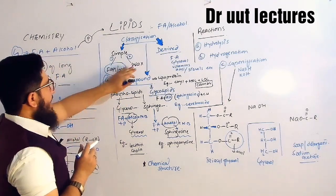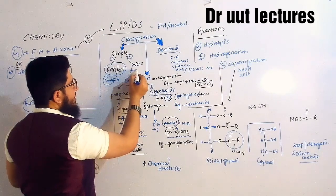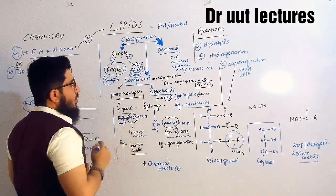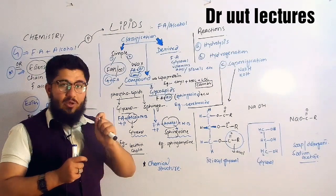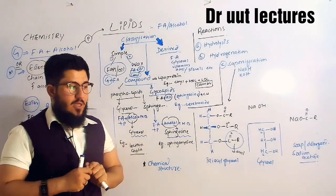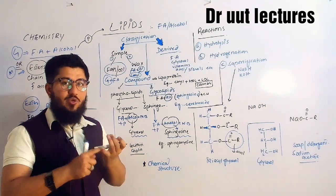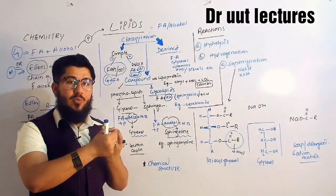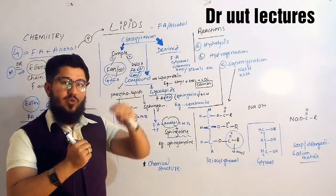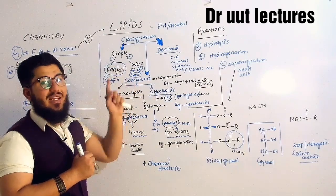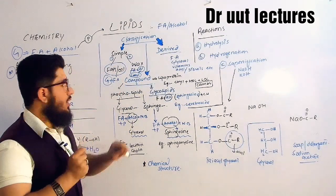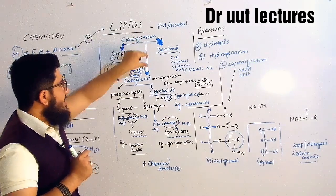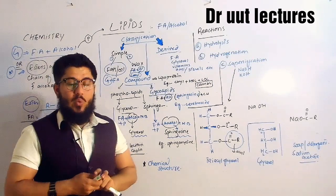The same is the case with wax — it is also a simple lipid containing fatty acid and alcohol, but the alcohol used here is cetyl alcohol. Cetyl alcohol is an alcohol which contains about a 16-carbon long chain. In wax, you can find fatty acid attached with an alcohol which is either cetyl alcohol or an alcohol containing a carbon chain from 12 to 32. When these are found in a lipid's chemical structure, that is a simple lipid called wax.